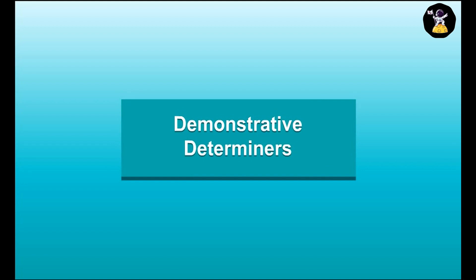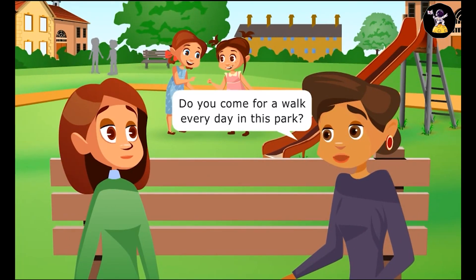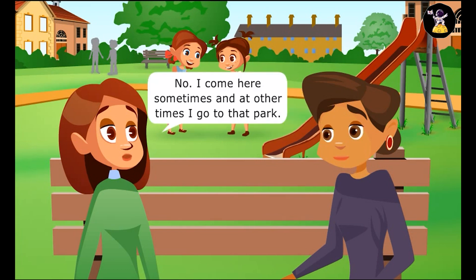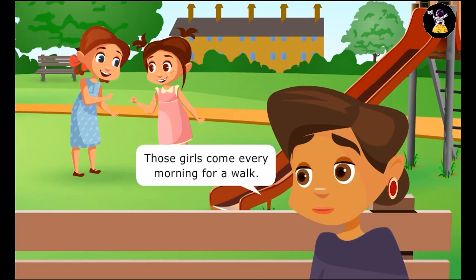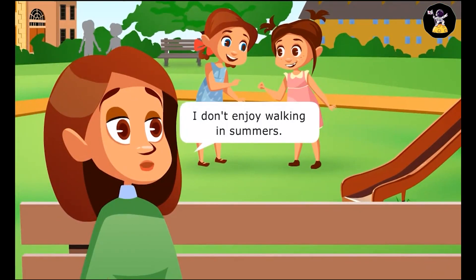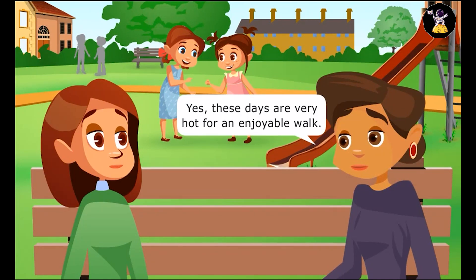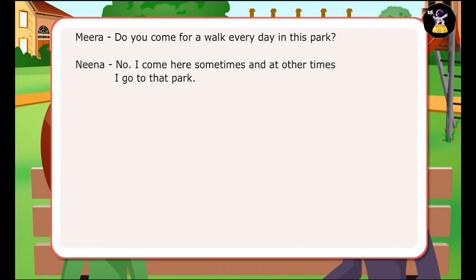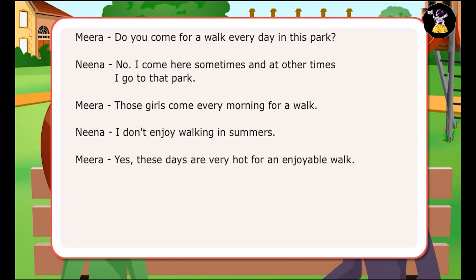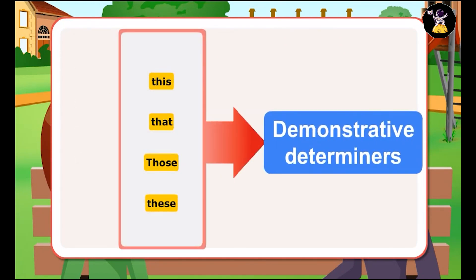Demonstrative Determiners. Do you come for a walk every day in this park? No, I come here sometimes and at other times I go to that park. Those girls come every morning for a walk. I don't enjoy walking in summers. Yes, these days are very hot for an enjoyable walk. In the dialogues, Meera and Neena have used words that give information about the nouns that follow by pointing specifically at them. The words this, that, those, and these are examples of demonstrative determiners.